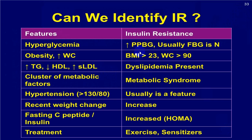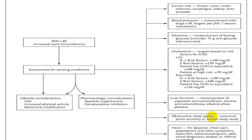Investigations for insulin resistance include fasting and post-prandial glucose, waist circumference, BMI, triglycerides, HDL, LDL, blood pressure, C-peptide level, and insulin level. A therapeutic trial with regular exercise and insulin sensitizers can also identify insulin resistance. After calculating BMI, look for cancer risk, blood pressure, hyperglycemia, hyperlipidemia, liver function, obstructive sleep apnea, and ischemic heart disease.